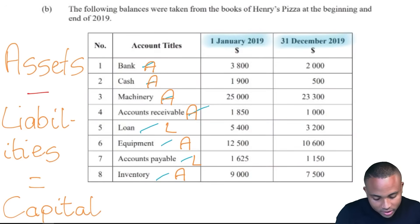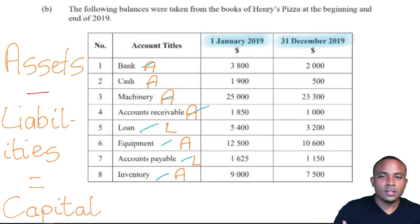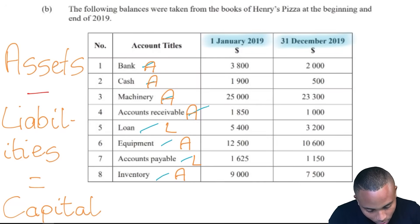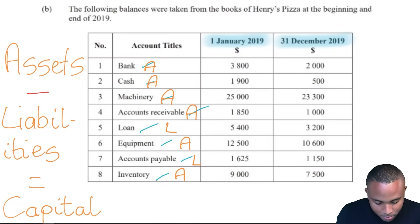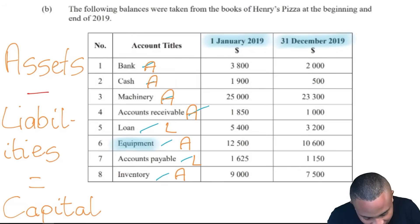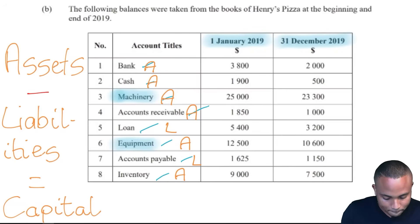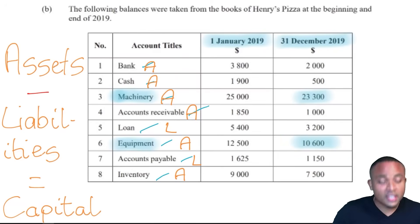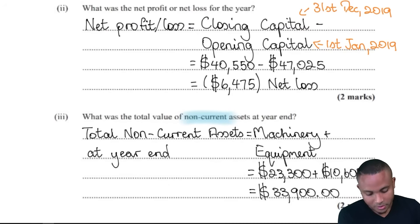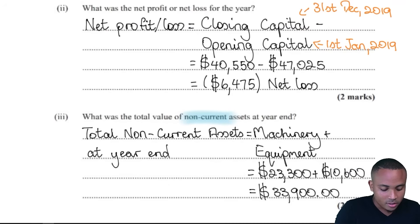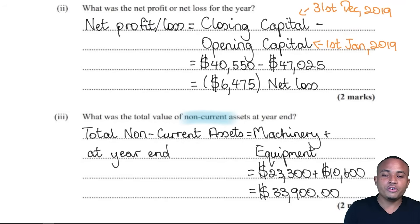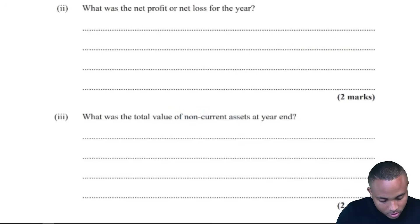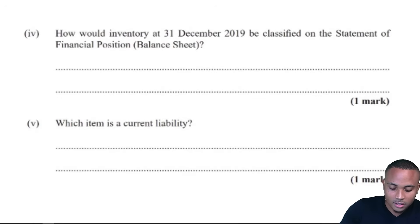Part three: what was the total value of non-current assets at the end of the year? We identify our non-current assets — equipment and machinery — highlighted in blue. All other assets are current assets. The amounts to add are: machinery at year end and equipment at year end, which are 23,300 and 10,600 respectively, giving total non-current assets at year end of 33,900.